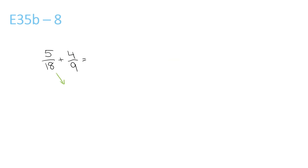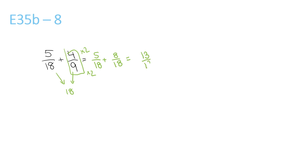18 and 9 both go into 18. 5 over 18 plus this number here. 9 times 2 is 18, so we have to do 4 times 2 is 8 over 18. 5 plus 8 is 13 over 18.